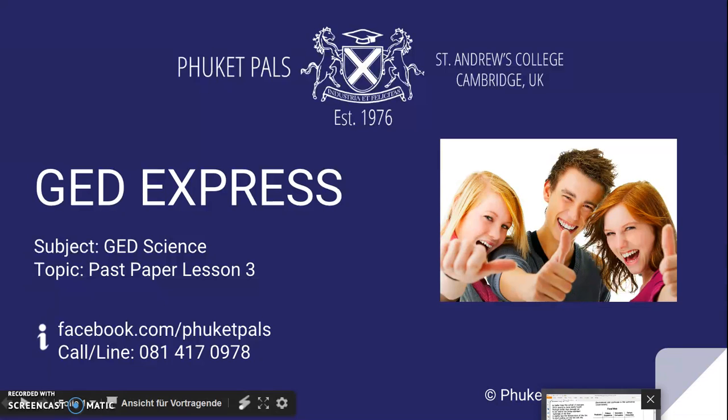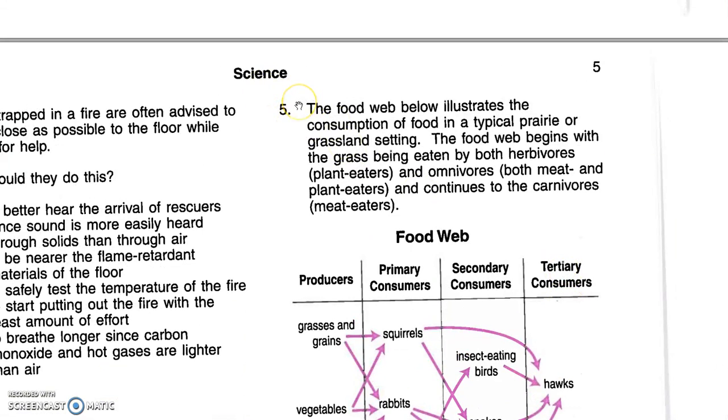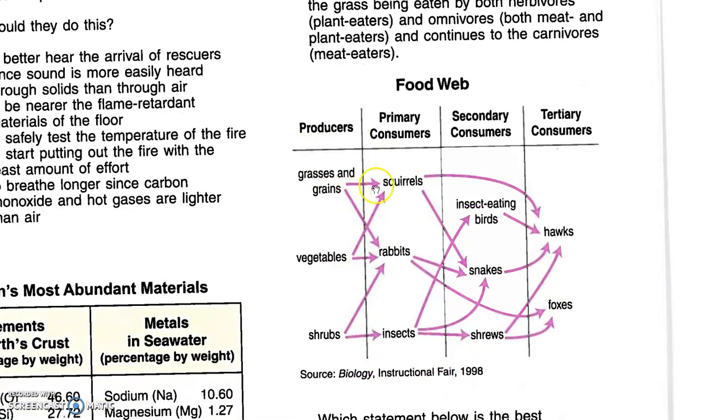We will continue with our last paper. We started with question number five. The food web below illustrates the consumption of food in a typical prairie or grassland setting, and we get to see the graphic of the food web.